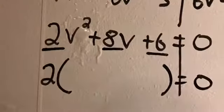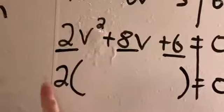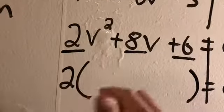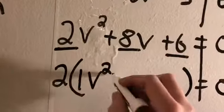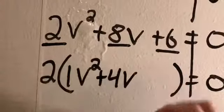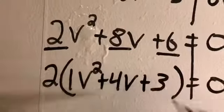And when we do this, when we find the greatest common factor, you leave it outside of the parentheses. So then 2 ÷ 2 is 1v². 8 ÷ 2 is positive 4v. 6 ÷ 2 is 3.